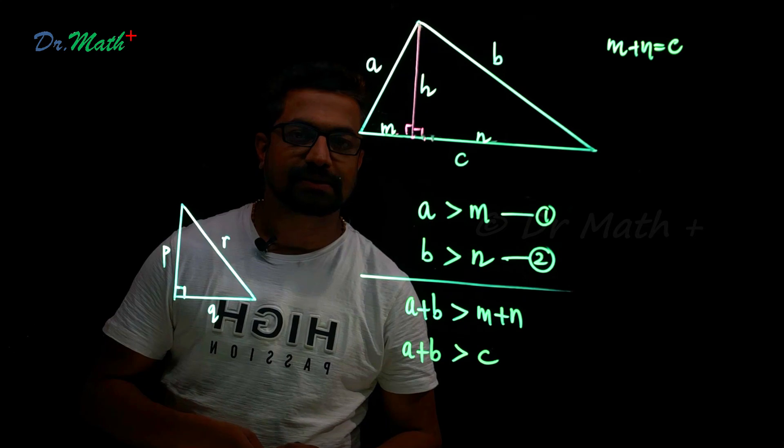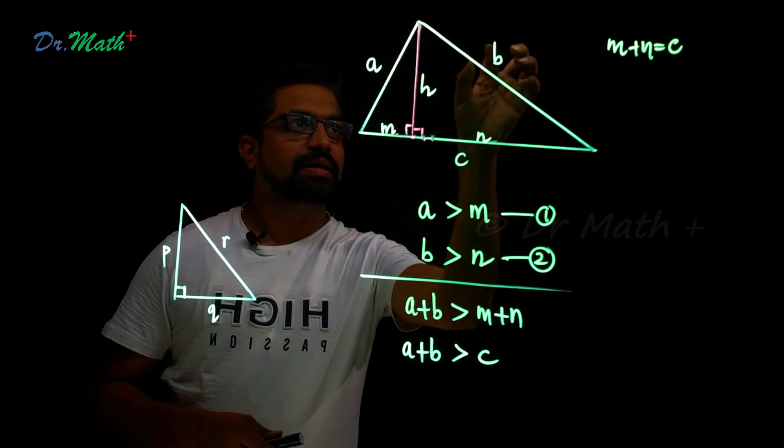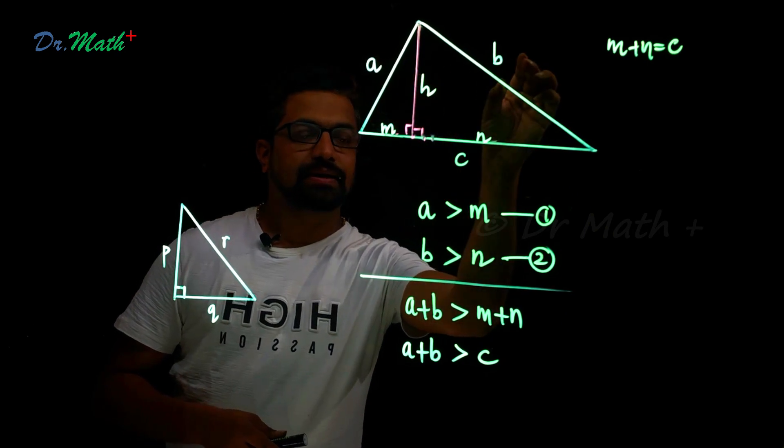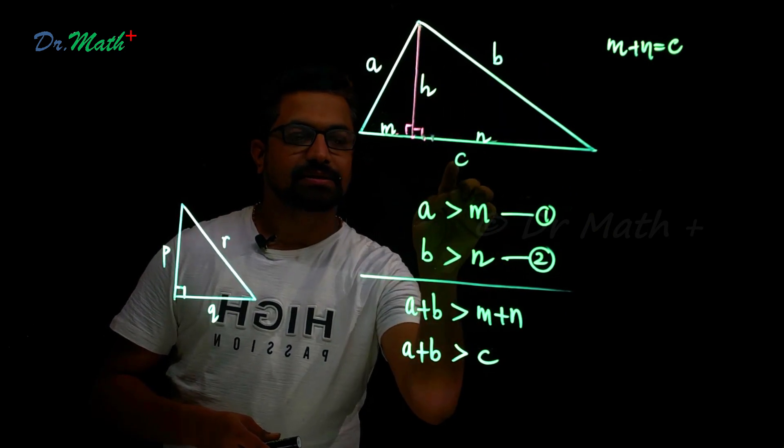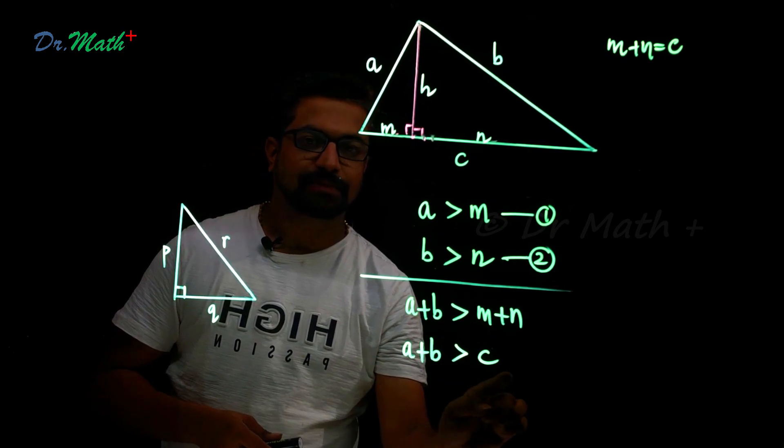But what is m plus n? m plus n is c, therefore a plus b is greater than c. With this it's very clear that sum of any two sides of the triangle, a plus b, is greater than the third side c. So a plus b is greater than c. That was very simple, right?